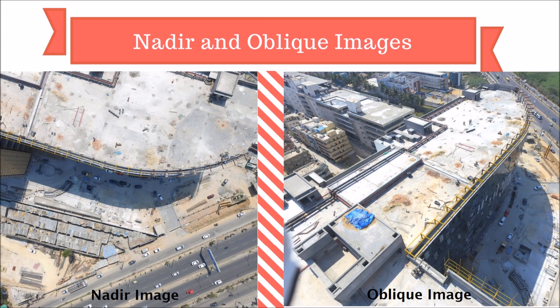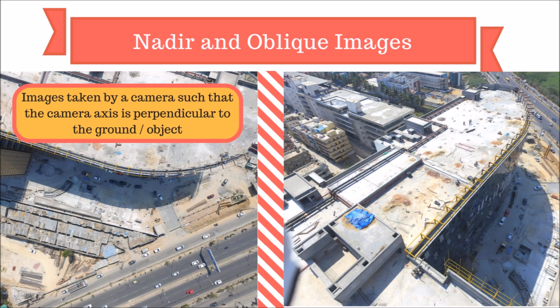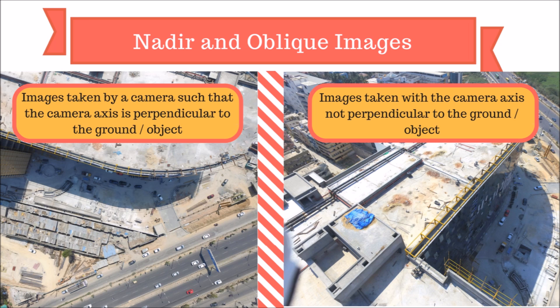Now let's understand what nadir and oblique images are. As you can see on the slide, to your left is a nadir image taken with the camera pointing directly downwards. In the oblique image, the camera is at an angle pointing towards the object of interest. For nadir images, the camera axis in the direction of the lens is perpendicular to the ground or object. For oblique images, images are taken with the camera axis not perpendicular to the ground or object.